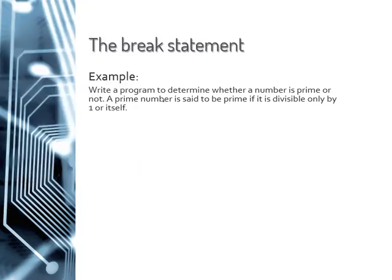So in this problem, this problem is considered as an example of the break statement. It says here that we are asked to write a program that determines whether a number is prime or not. A prime is said to be a number that is not divisible, that is only divisible by one and itself. There's nothing that can divide a prime number.